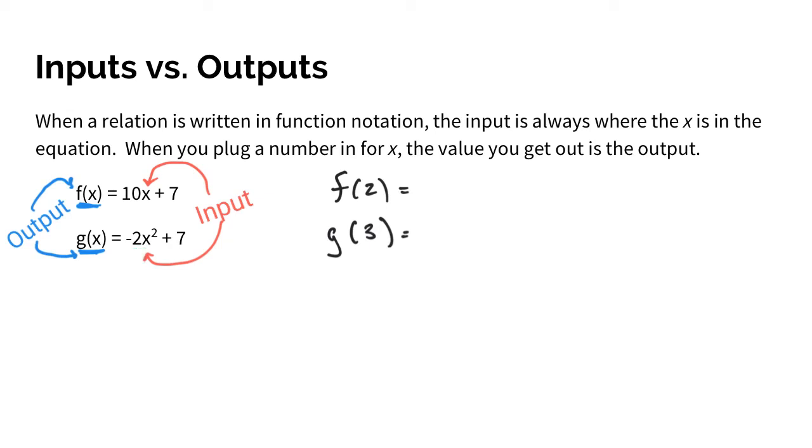So let's do f(2) real quick. So that means we want to plug 2 in for x, so you're going to have 10 times 2, and then you're still going to have plus 7. And now it's just you evaluate, 10 times 2 is 20, plus 7, then is going to equal 27.